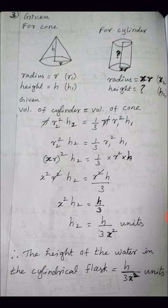We need to find h2, the height of the cylindrical flask. Shifting the remaining terms to the other side, x² goes into the denominator, giving h2 = h / (3x²). Therefore, the height of the water in the cylindrical flask equals h divided by 3x² units.